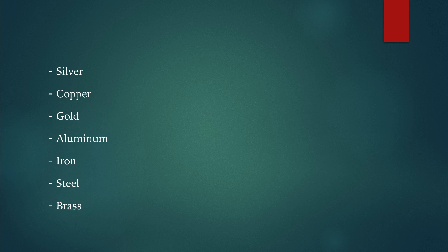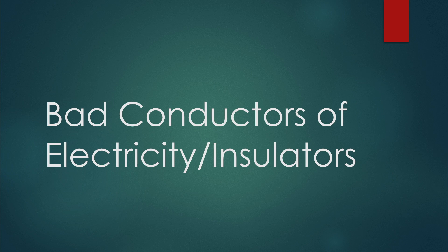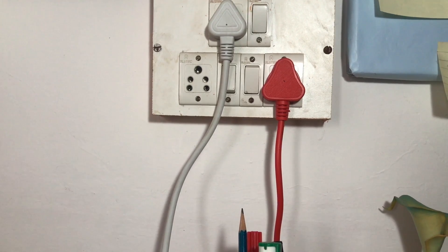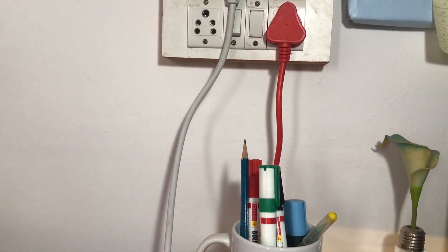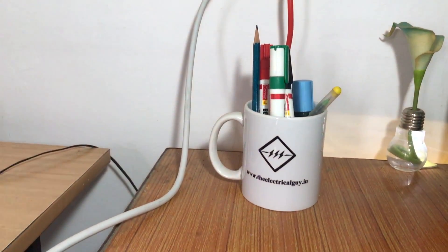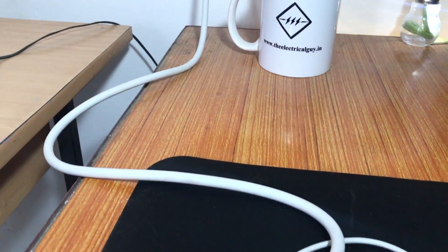Now let's see bad conductors of electricity, also called insulators. Materials with very few or no free electrons are called bad conductors or insulators. Even if you make a wire from such a material, no electricity will flow through it because it has no free electrons. Examples of insulators include plastic, porcelain, glass, and air. Insulators play a very important role in the electrical industry — for example, cables in our houses are insulated with plastic to avoid direct contact with live conductors, saving many lives every day.